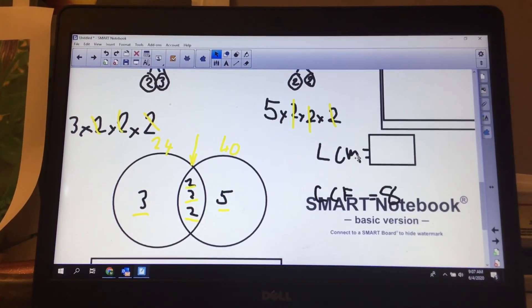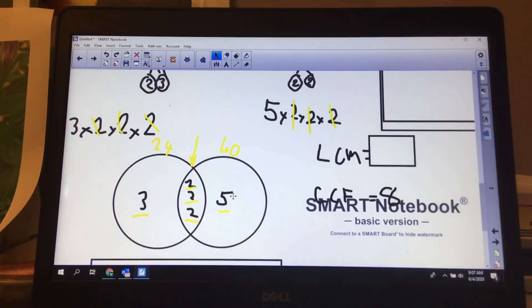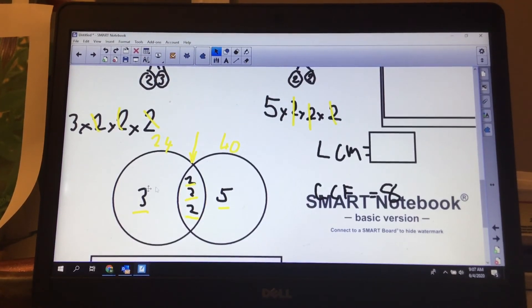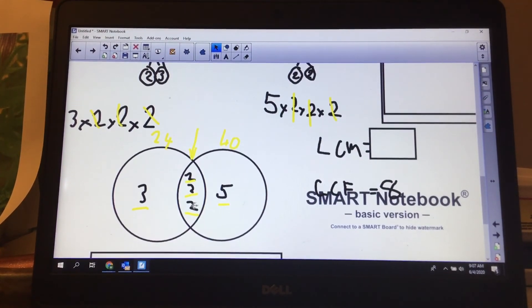My least common multiple, I multiply them all together. You're going to need a calculator probably. If you can do mental math, it's always easier to take care of your bigger numbers first before you do your doubles. So 3 times 5 is 15, times 2 is 30, times 2 is 60, times 2 is 120.